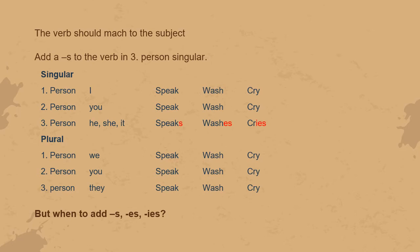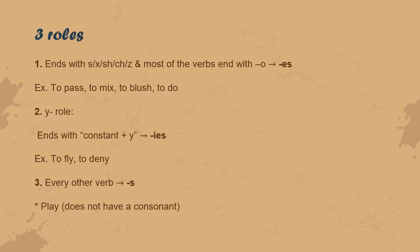But when do we add them, and how do we know when to add which one? There are three rules. The first rule is that when the verb ends with -s, -es, -sh, -z, and most verbs that end with -o, they get an -es.